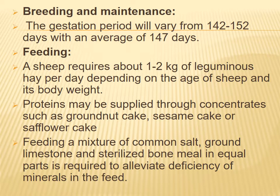Sheep breeding and maintenance: the gestation period varies from 142 to 152 days, with an average of 147 days. Feeding: a sheep requires about 1 to 2 kg of leguminous hay per day depending on age and body weight. Proteins may be supplied through concentrates such as groundnut cake, sesame cake, or safflower cake. A mixture of common salt, ground limestone, and sterilized bone meal in equal parts is required to prevent mineral deficiency.